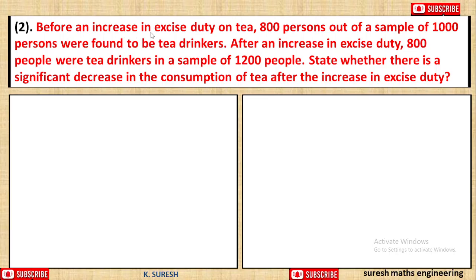Before an increase in excise duty on tea, 800 persons out of a sample of 1000 persons were found to be tea drinkers. After an increase in excise duty, 800 people were tea drinkers in a sample of 1200 people. State whether there is a significant decrease in the consumption of tea after the increase in excise duty.